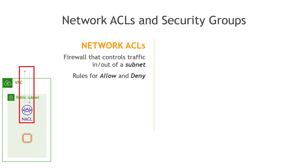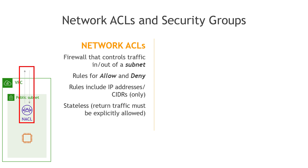The rules can include IP addresses or CIDRs only. In other words, you can't allow or deny traffic from another NACL. These are stateless, meaning that return traffic has to be explicitly allowed. If you have an inbound rule, you'll have to create a corresponding outbound rule for that full connection to work.